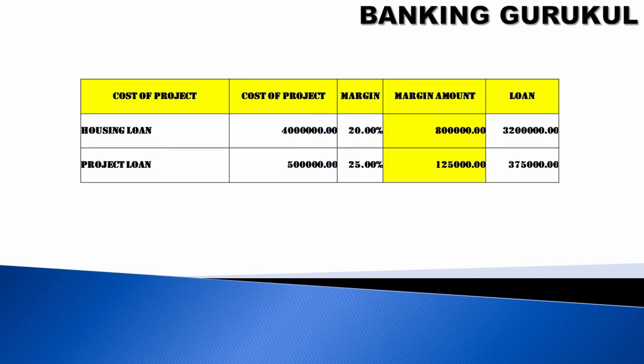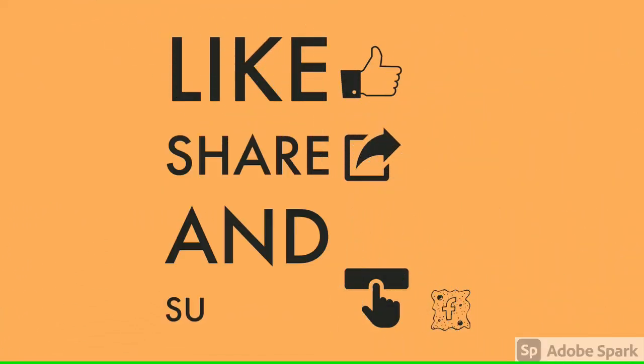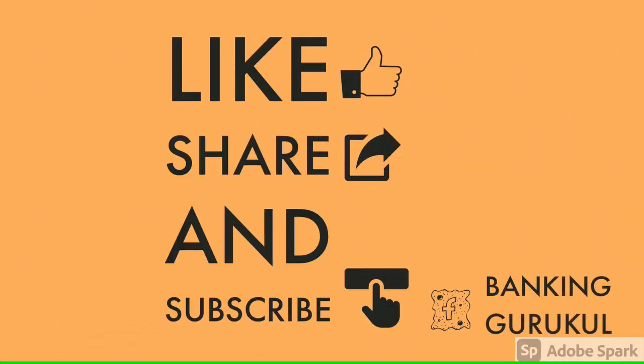For example, in a housing loan: cost of project is 40 lakhs, 20% margin means the margin amount will be 8 lakhs, which will be borne by the customer or borrower, and 32 lakhs will be the loan from the bank. This is the margin amount concept. Thank you friends.